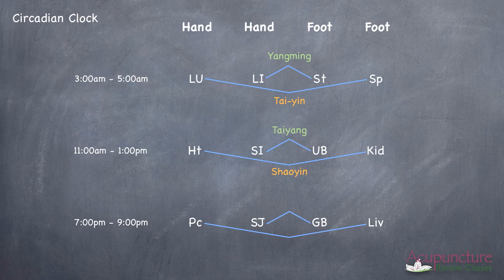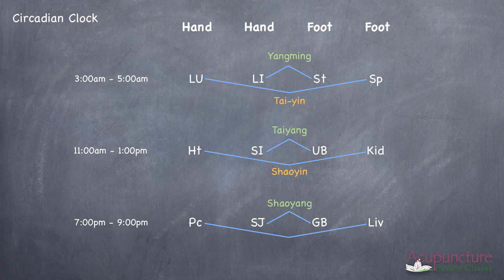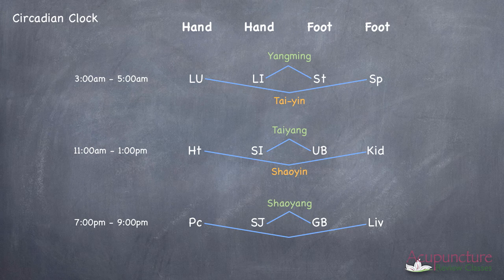Going to the San Jiao and the gallbladder, above that line, you're putting Shao Yang. The San Jiao is hand Shao Yang, the gallbladder is foot Shao Yang. Under the pericardium and the liver, you're putting Jue Yin.